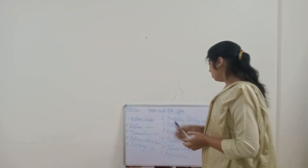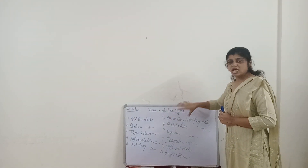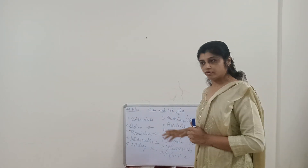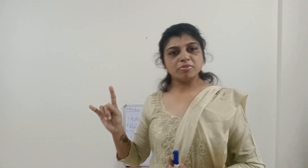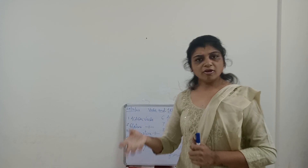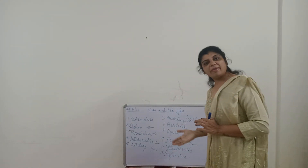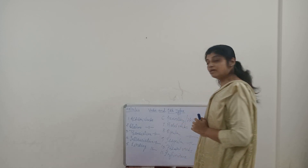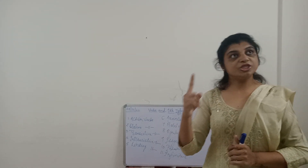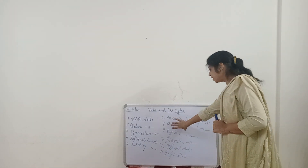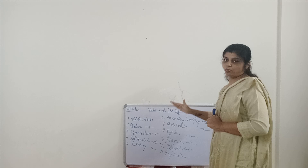Next is helping verbs, also known as auxiliary verbs. The name itself indicates they are connected with the main verb. For example: I am going to Mumbai. Here, 'go' is the main verb and 'am' is the helping verb, specifying the subject along with the main verb.